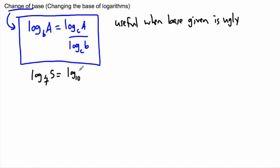The rule says take log base whatever you want, so let's take log base 10 of 5 over log base 10 of 7. In other words, on my calculator I can just press log 5 over log 7 and be done with it.